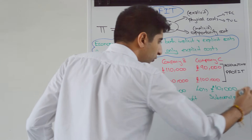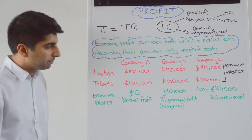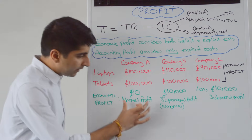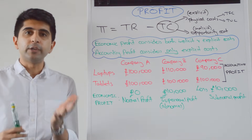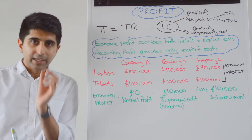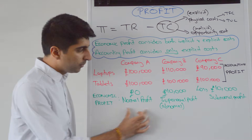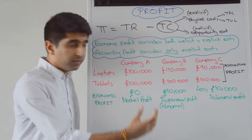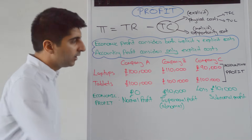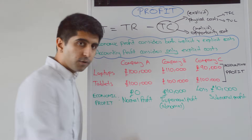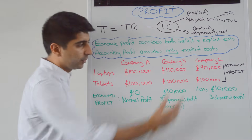You need to know these names, and importantly they are names that we use for economic profits. Zero equals normal profit. Greater than zero equals supernormal or abnormal profit. Less than zero equals subnormal profit or an economic loss.